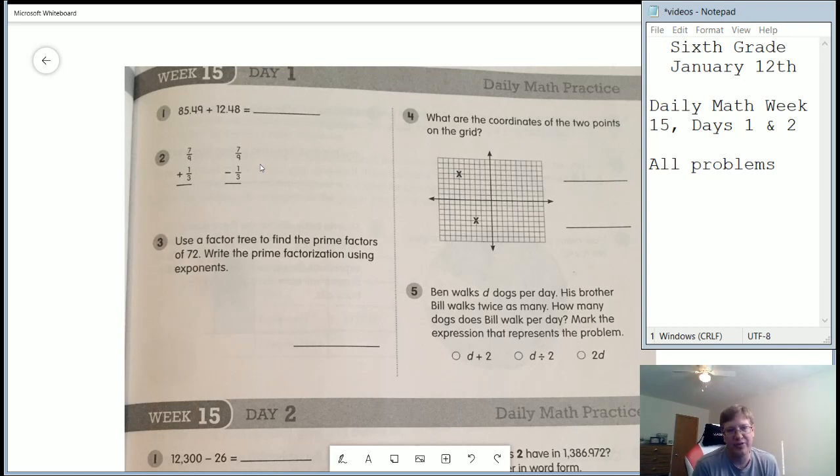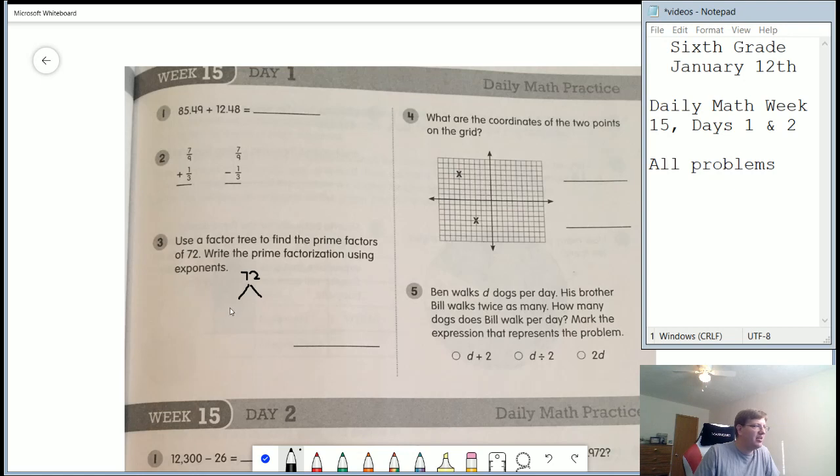So one and however many ninths we would end up with, or reduce if you have the option to do that. Number three is a factor tree. So our factor tree would start with 72. And then we can go ahead and draw our branches off like this. And we can think of two numbers that we can multiply together to get to 72. And then we keep going until the only thing that we have left are prime numbers. So just as a reminder about how that works.